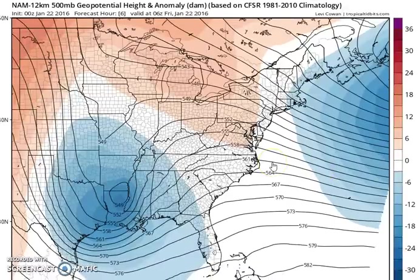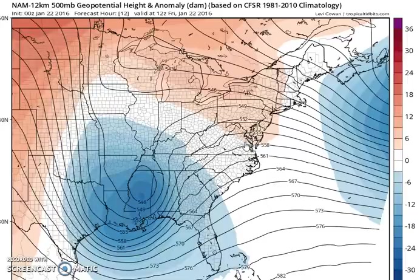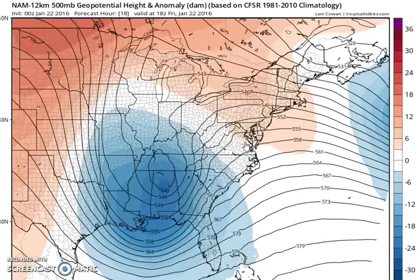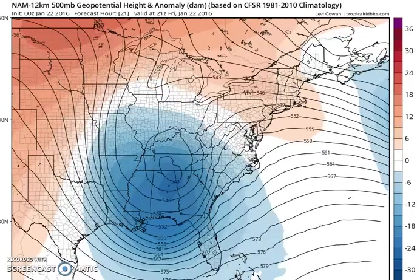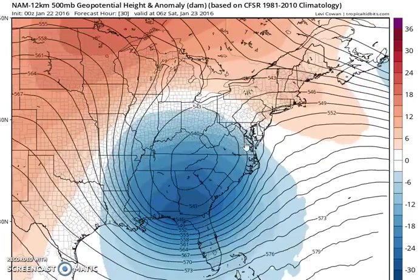Hi everybody, it's meteorologist Joe Chaffee. Let's go through the models tonight because there are a lot of differences showing up. Usually at this point things should be coming together instead of getting further apart, but I'm going to show you the differences between the models that lead to this forecast issue.